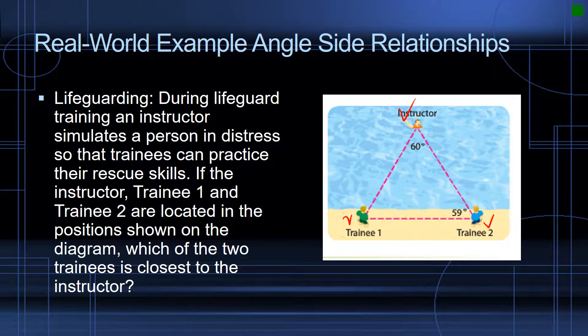Well, based on the angle-side relationships, the shortest side is going to be opposite the shorter angle. We're given an angle measure of 60 degrees here and 59 degrees here — almost equilateral, but not quite. We're not told the angle where trainee one is standing, but we can figure it out: 180 degrees in a triangle, minus 60 minus 59, means trainee one is at a 61 degree angle from the instructor.